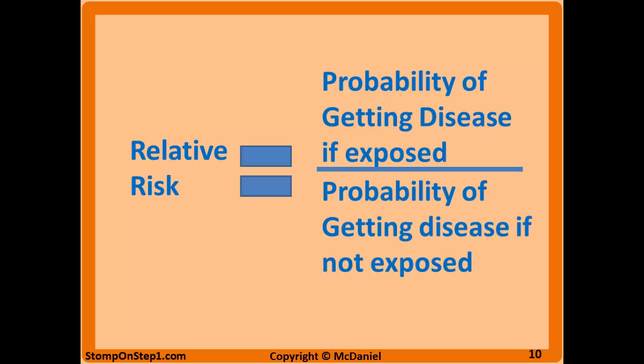Here is the relative risk that you would use for cohort studies. It would be the probability of getting a disease if exposed divided by the probability of getting a disease if you're not exposed.